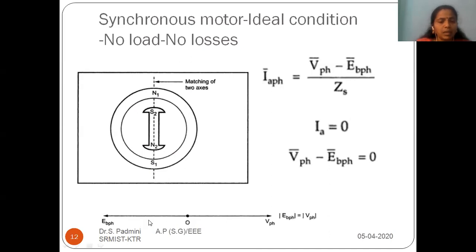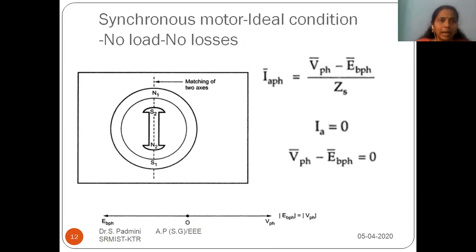From the phasor diagram, V-phase and E-phase are equal in magnitude and act in the same position. When you take the vectorial difference, the numerator becomes zero, so the current existing in the circuit is zero. This is the inference from the ideal no-load condition: the synchronous motor does not draw any armature current. In other words, since there are no losses, no current is required to produce torque.